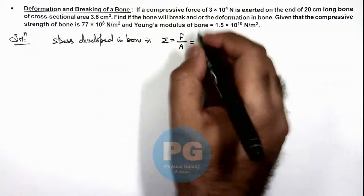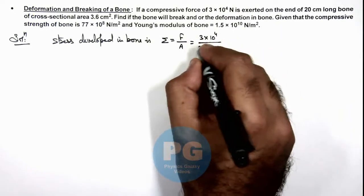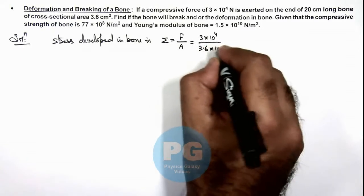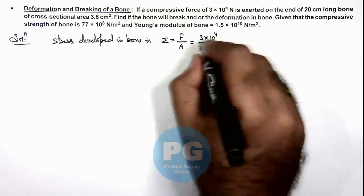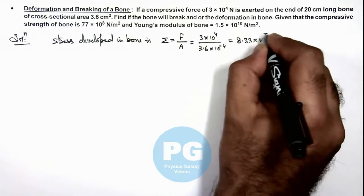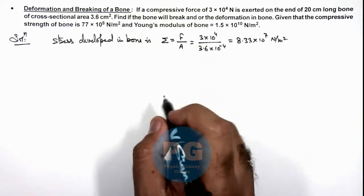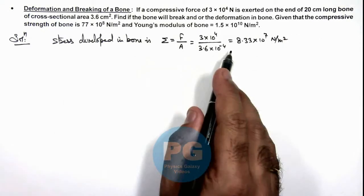The force is 3×10⁴ divided by the area 3.6×10⁻⁴, and this is numerically giving us 8.33×10⁷ N/m². This is the stress developed in the bone.